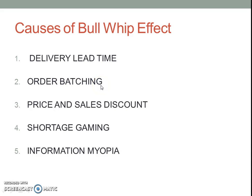Next is Order Batching. Some firms have a policy of placing orders only in large batches. This tendency of the firms in the supply chain to place large orders can lead to Bullwhip Effect.